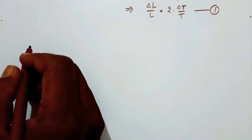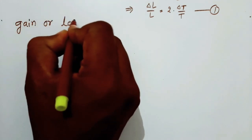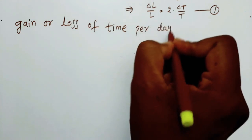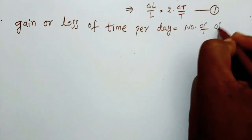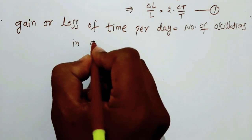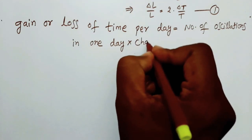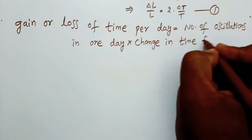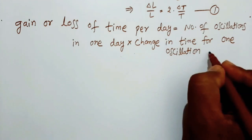We know the gain or loss of time per day is equal to the number of oscillations in one day multiplied by the change in time per oscillation. Let us call this equation 2.